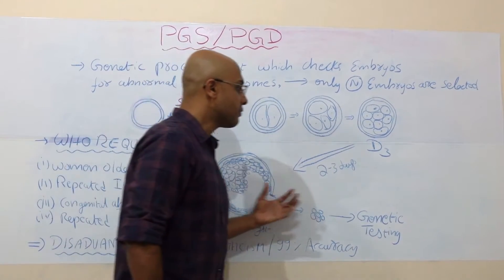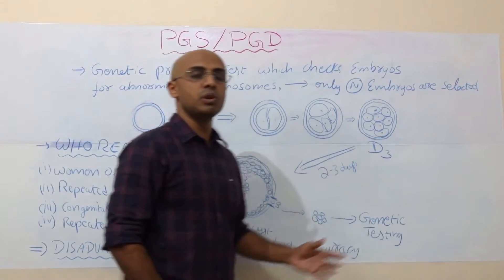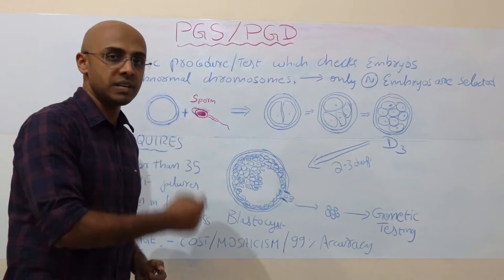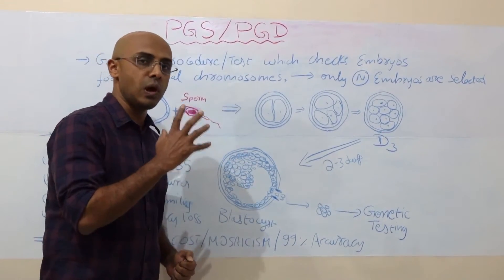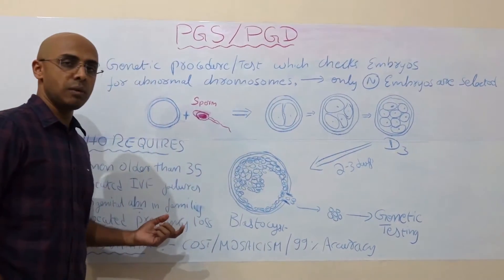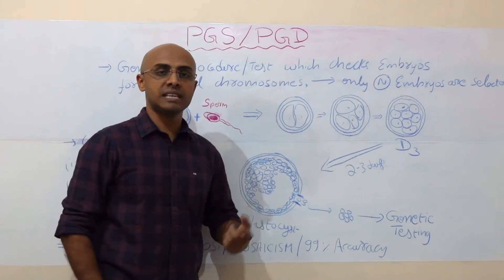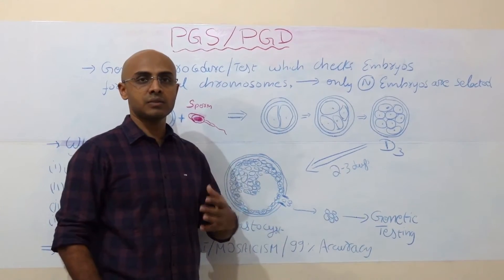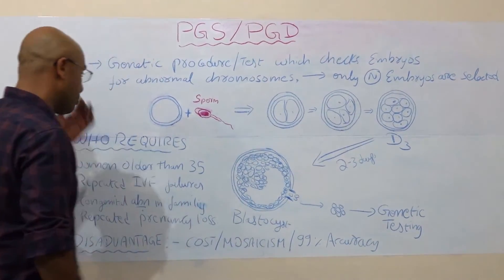If you have 5 embryos, we can do genetic testing on all 5 and determine which is the best embryo — the one with full, normal chromosomes — and select that particular embryo for transfer. By doing this, the chances of success are better and you will have a healthy baby. That is what the entire PGS procedure helps us achieve.